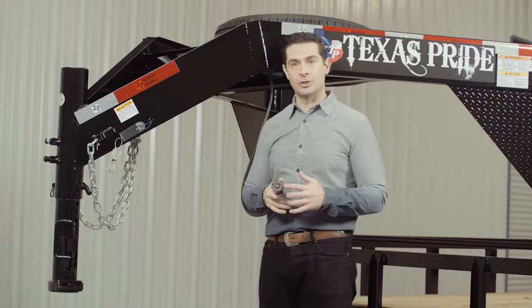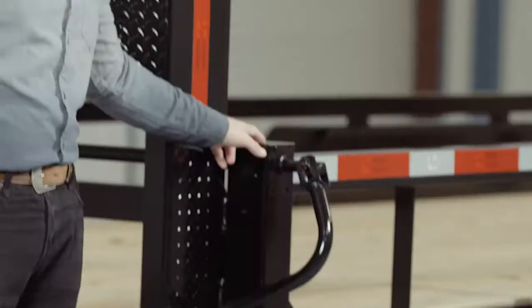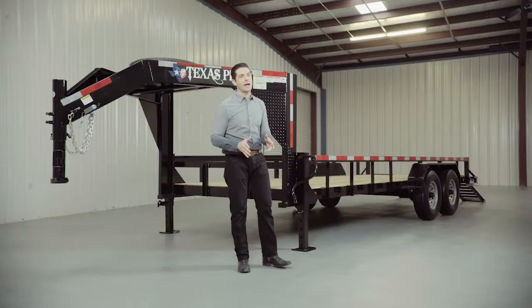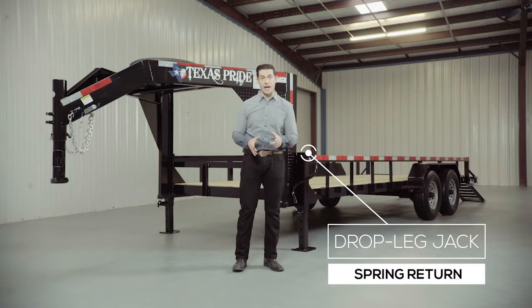At the back of the neck there are dual 12,000 pound heavy duty drop leg jacks with spring return. Almost all Texas Pride gooseneck trailers feature dual jacks for more stability and lifting power to make it easier for connecting and disconnecting your trailer from your vehicle.